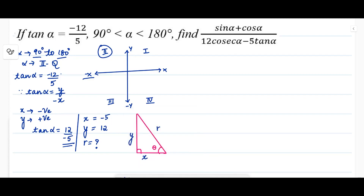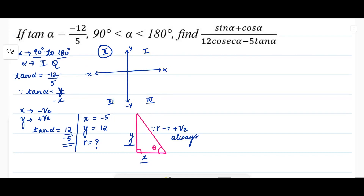The value of r will always be positive, but the values of x and y can be negative or positive depending on which quadrant θ lies in. To find the value of r we use the Pythagorean theorem.